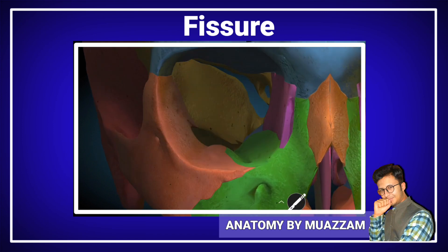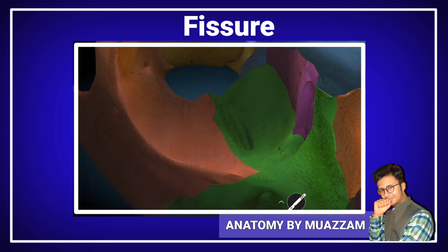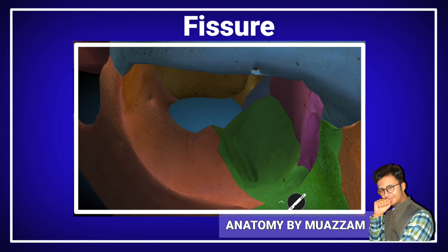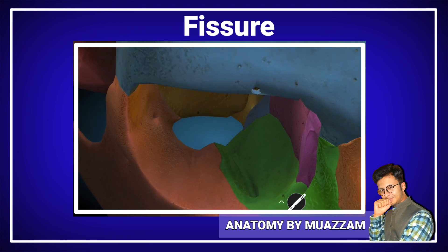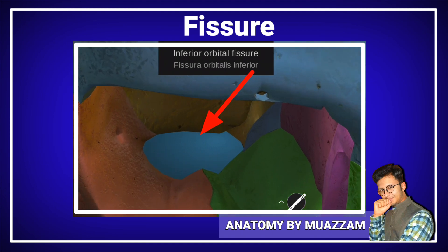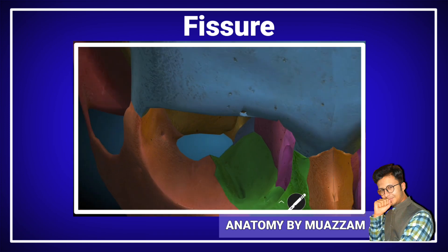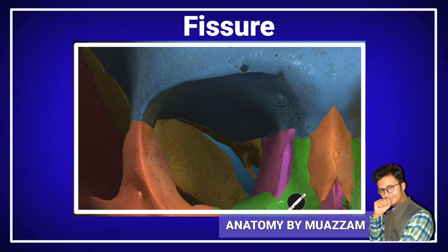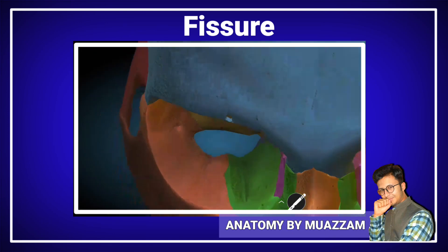The skull also has an inferior orbital fissure. These two fissures — the superior and inferior orbital fissures — allow different nerves and vessels to pass through to the eyeball, so they have a very important role.